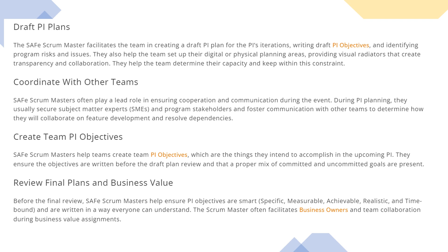The second aspect of facilitation of PI planning is drafting PI plans. The SAFe Scrum Master facilitates the team in creating a draft PI plan for the PI's iterations, writing draft PI objectives, and identifying the program risks and issues. They also help the team set up their digital or physical planning areas, providing visual radiators that create transparency and collaboration. They help the team determine capacity and keep within their constraints.